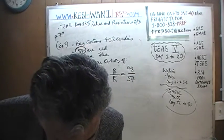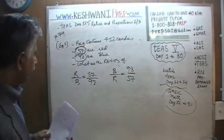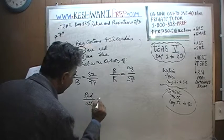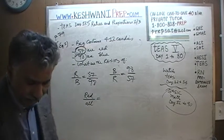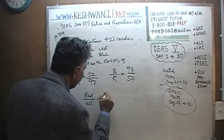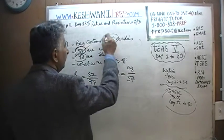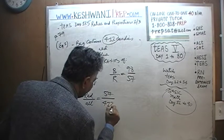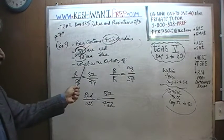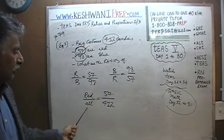Finally, they are asking us for the ratio of red to all. How many red candies do we have? We have 57 red candies. And how many total candies do we have? We have 412 total. So those are the three ratios: red to blue, blue to red, and red to all.